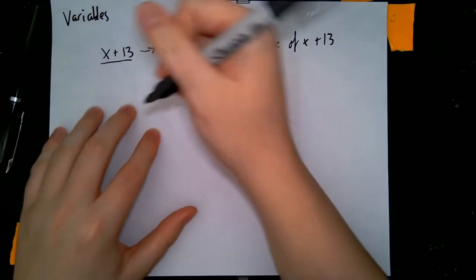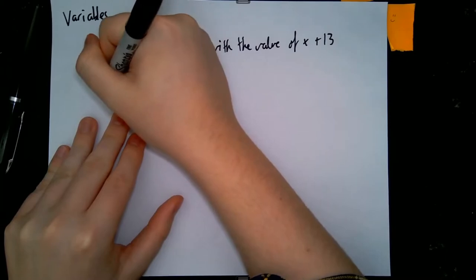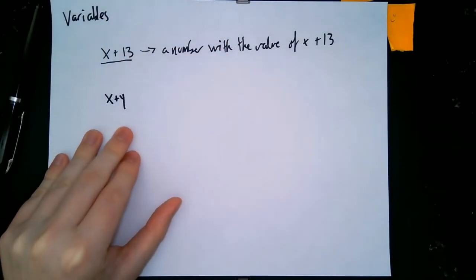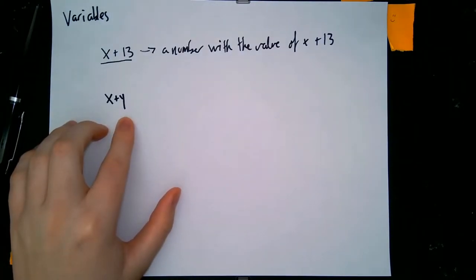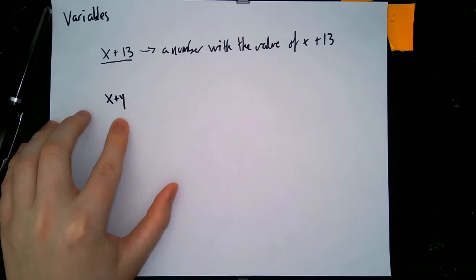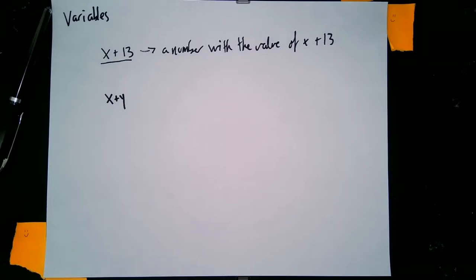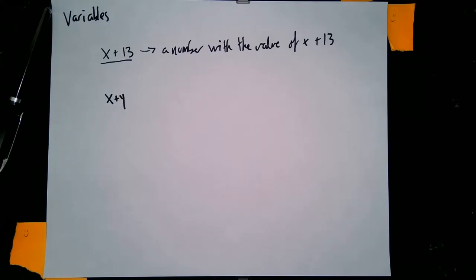Similarly, we can have statements with only variables, like x plus y. Whenever we find values for x and y, we're able to figure out what the statement will be. Working with variables is really important — as you saw when you started doing algebra, we're able to work with many statements without needing to know the actual values of x or y, and because of that we get to draw powerful relationships in the statements we're making.